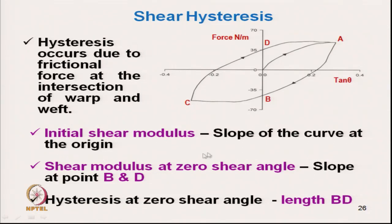The initial shear modulus is the slope at the initial points of the curve. The shear modulus at 0 shear angle is obtained by taking the slopes at points B and D, giving two values whose mean can be used. The hysteresis at 0 shear angle is the distance between points B and D. From these we can calculate the shear stresses, which are basically due to frictional contact.